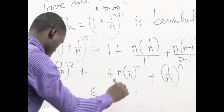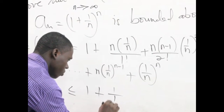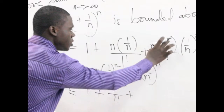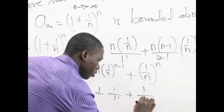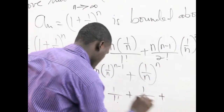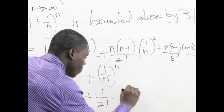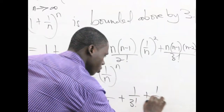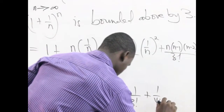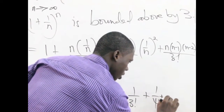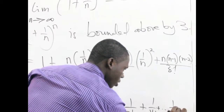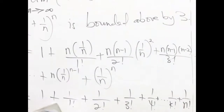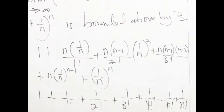So we have 1 plus 1 over 1 factorial, then plus 1 over 2 factorial, then 1 over 3 factorial, 1 over 4 factorial, and this continues as 1 over k factorial, all the way to 1 over n factorial.